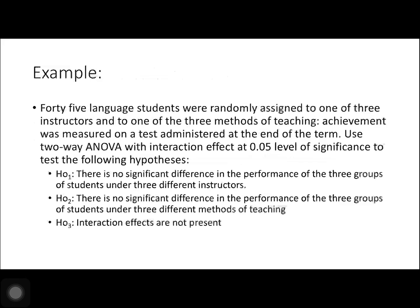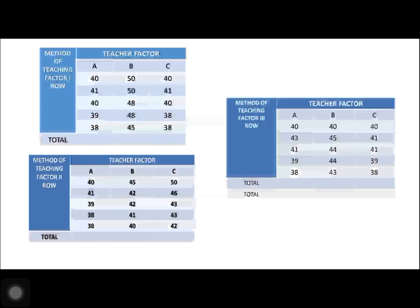We have three null hypotheses. First, there is no significant difference in the performance of the three groups of students under three different instructors. Second, there is no significant difference in the performance of the three groups of students under three different methods of teaching. Third, interaction effects are not present.